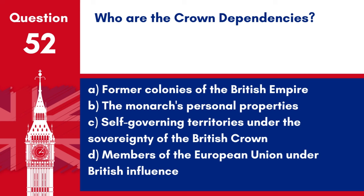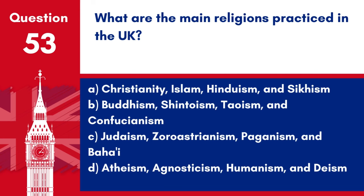Question 52. Who are the crown dependencies? A. Former colonies of the British Empire. B. The monarch's personal properties. C. Self-governing territories under the sovereignty of the British crown. D. Members of the European Union under British influence. Answer: B. The crown dependencies, which include Jersey, Guernsey and the Isle of Man, are self-governing, but under the sovereignty of the British crown.